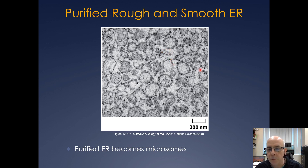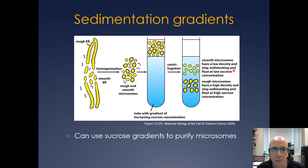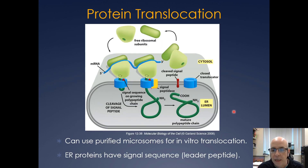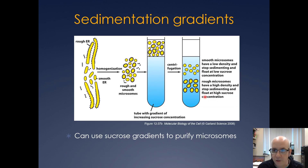You can actually purify the endoplasmic reticulum — it's something I did in graduate school. You create what are called microsomes containing rough ER and smooth ER fractions. The method is straightforward: you gently lyse your cell, homogenize it so the smooth and rough ER break into rough and smooth microsomes, then layer them on a sucrose gradient and centrifuge. Depending on their density, certain things travel faster through the gradient, allowing you to collect fractions and purify either rough ER or smooth ER. Using these purified microsomes, you can study translocation into the ER quite easily.